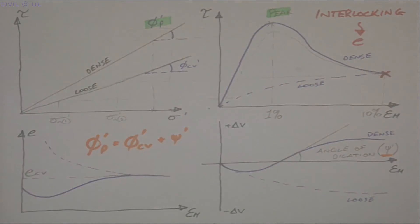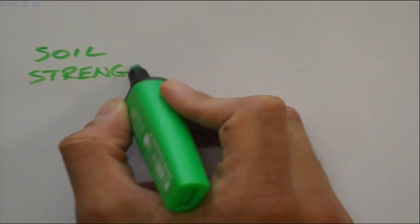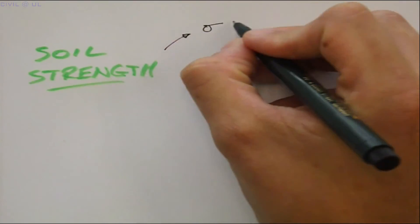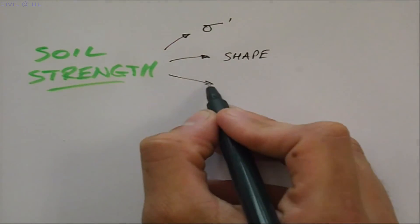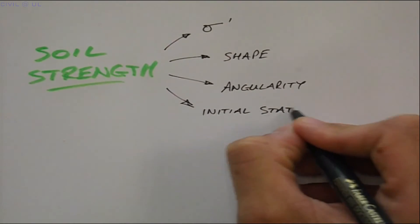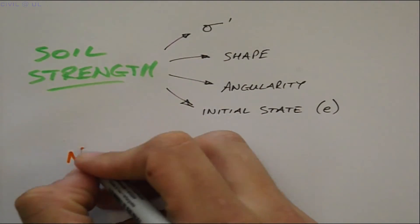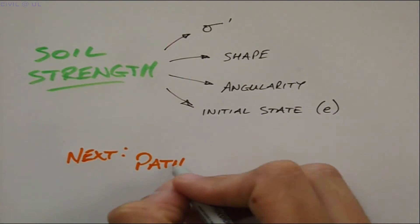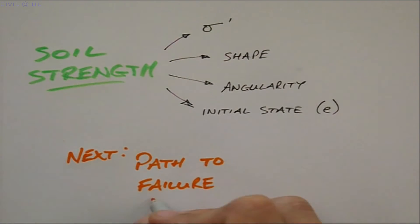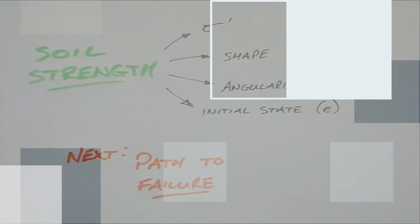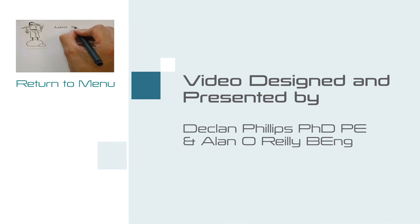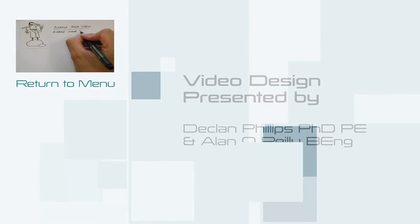So, to conclude, we have shown how the soil can have different strengths depending on its effective stress, its grain shape and angularity, and its initial state. In our next video, we will show how the path to failure also influences shear strength. We have covered quite an amount in the last few segments, so I would encourage you to find some quiet time to ponder these concepts as you read the core text on this topic. Thank you.